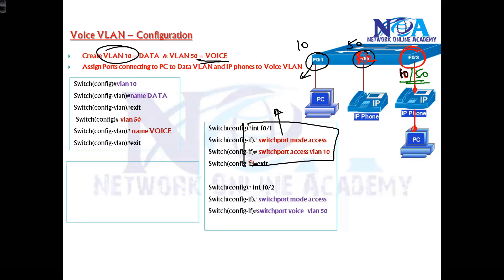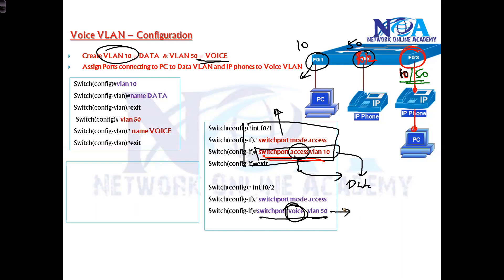If you want to assign the voice VLAN, you should give a different command. If I say 'switchport access VLAN 10', that assigns a data VLAN. But when I say 'switchport voice VLAN 50', that means I'm saying this port is going to be a member of the voice VLAN and is going to carry VoIP traffic. This is the key difference between voice and data VLAN configuration.